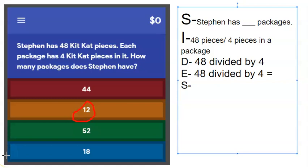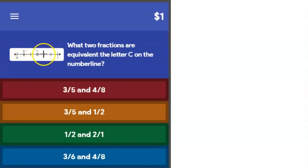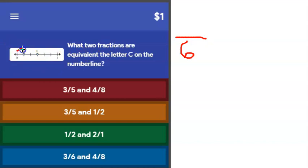Next question: what two fractions are equivalent with the letter C on the number line? I need to figure out how many pieces are in this whole. Counting between the lines from zero to one: one, two, three, four, five, six. So the denominator is going to be six. Now how many jumps to get to C? One, two, three. So this fraction represents three sixths.